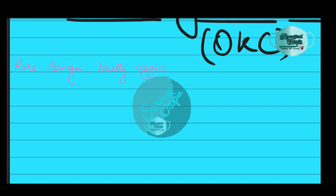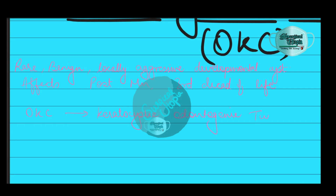It is a rare and benign but locally aggressive developmental cyst. It most often affects the posterior mandible and most commonly presents in the third decade of life. It was initially classified as odontogenic keratocyst by the WHO, which was later reclassified as keratocystic odontogenic tumor from 2005 to 2017.